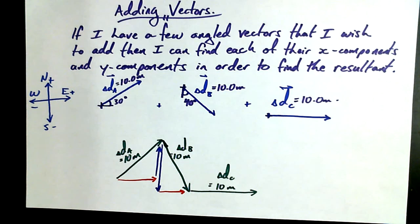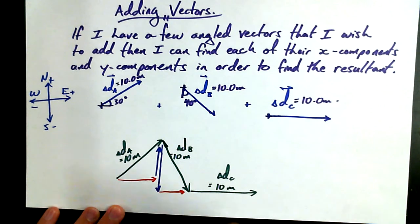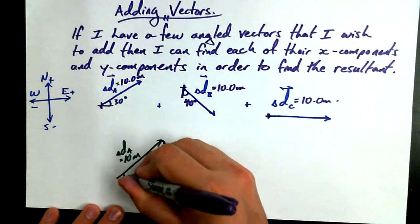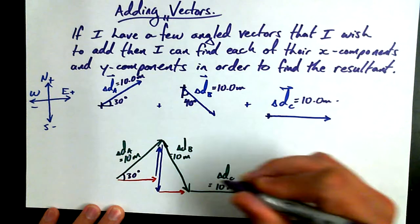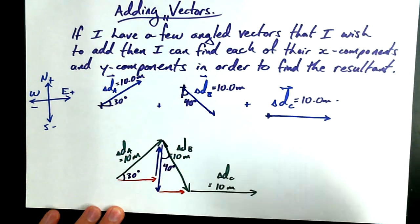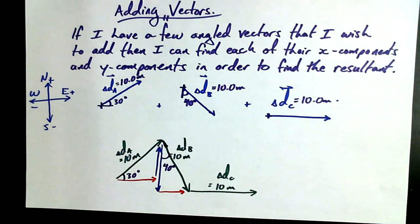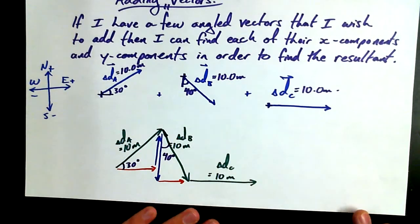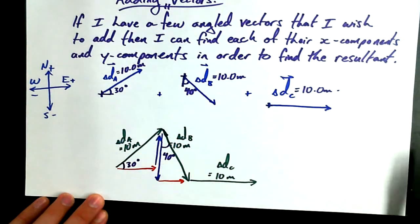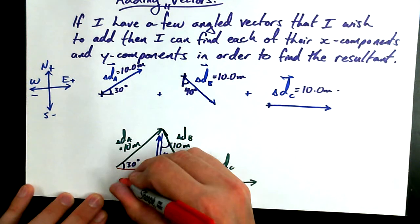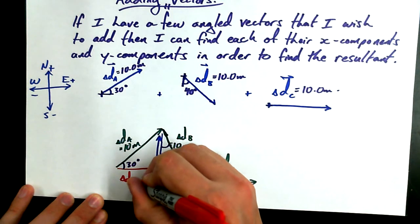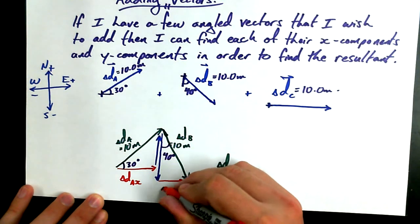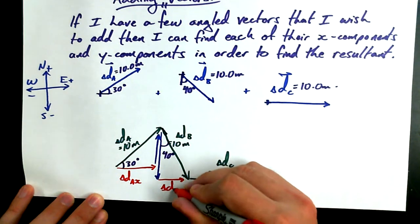All right. So finding the x component and the y component. One more piece of information we know is that this is 30 degrees. We know that this is 40 degrees. And I'd like to find some values that I would like to call delta d A x, delta d B x,